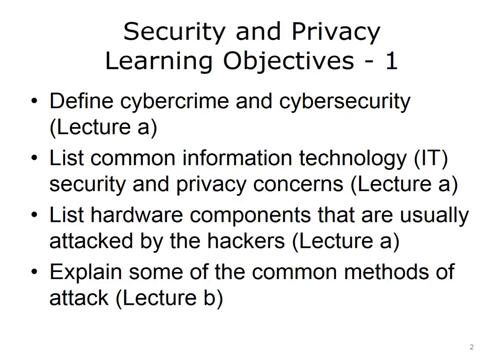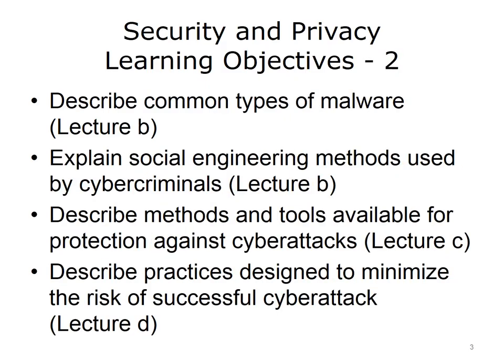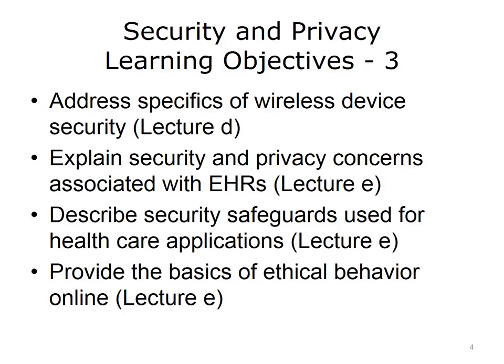The objectives for this unit, Security and Privacy, are to define cybercrime and cybersecurity, list common IT security and privacy concerns, list the hardware components that are usually attacked by hackers, explain some of the common methods of attack, describe common types of malware, explain social engineering methods used by cybercriminals, describe methods and tools available for protection against cyberattacks, describe practices designed to minimize the risk of successful cyberattack, address specifics of wireless device security, explain security and privacy concerns associated with electronic health records or EHRs, describe security safeguards used for healthcare applications, and provide the basics of ethical behavior online.